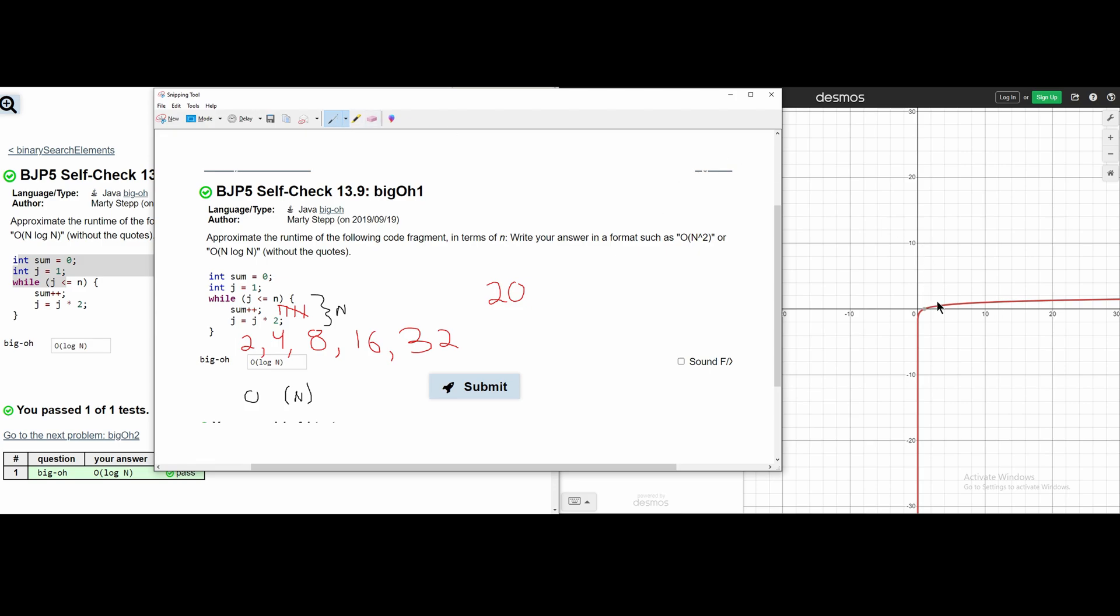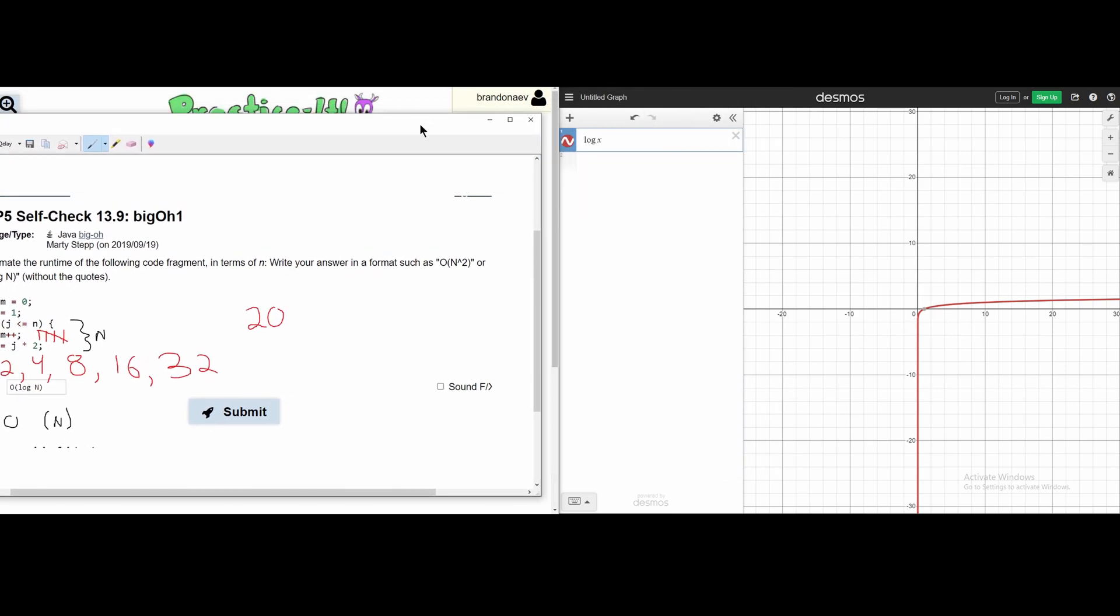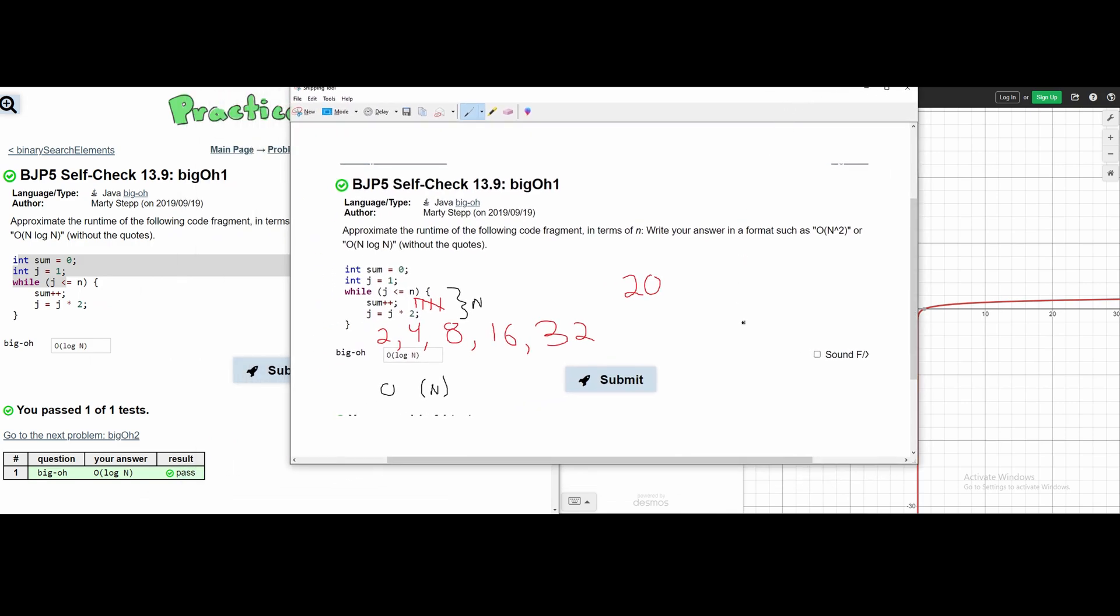If we look at this graph of log x, we can see that if we start at our y equaling 0, it's going to slowly grow bigger and bigger and bigger as this does. So our statements are going to continue logarithmically, and that's why we're going to have a Big O log n.